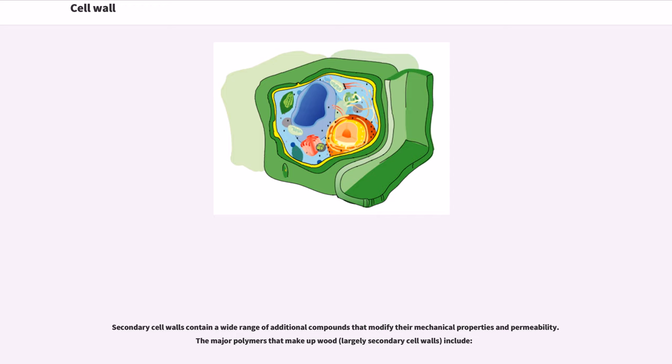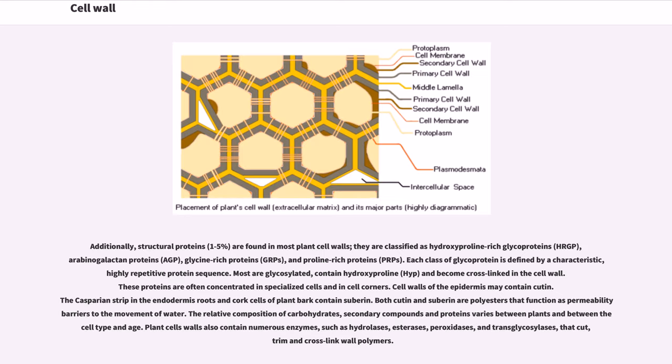Secondary cell walls contain a wide range of additional compounds that modify their mechanical properties and permeability. The major polymers that make up wood, largely secondary cell walls, include... Additionally, structural proteins, 1-5%, are found in most plant cell walls, they are classified as hydroxyproline-rich glycoproteins (HRGP), arabinogalactan proteins (AGP), glycine-rich proteins (GRPs), and proline-rich proteins (PRPs). Each class of glycoprotein is defined by a characteristic, highly repetitive protein sequence. Most are glycosylated, contain hydroxyproline (HYP), and become cross-linked in the cell wall.